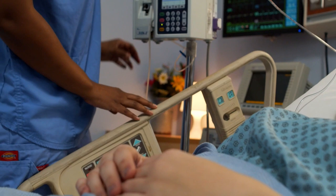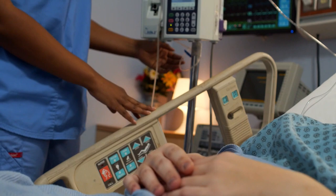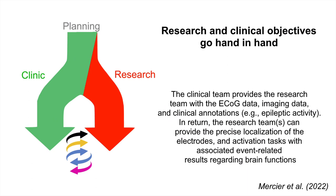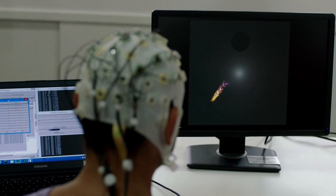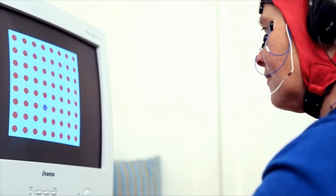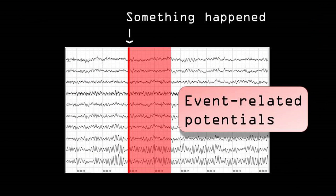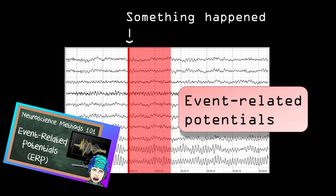In many cases, epilepsy patients who have received an ECOG implant will be observed for several days or even several weeks to identify the sources of the epileptic seizures. If a patient gives consent, the time in between can be used for research purposes, as the grids give a unique opportunity to study electric activity at high spatial and temporal resolution. Research protocols on patients with ECOG are often quite similar to EEG research and can involve visual tasks, cognitive tasks, or motor tasks. Subsequently, event-related responses can be investigated — meaning the brain response to a certain event or action, for example a button press or the observation of a stimulus.